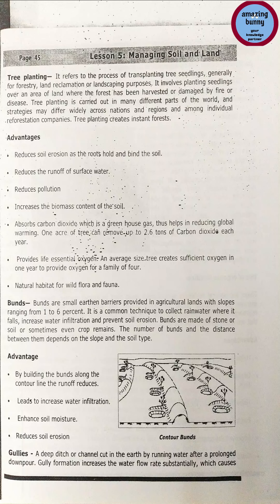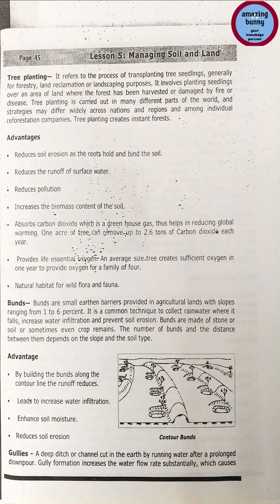Method 5 — Bunts: small earthen barriers provided in agricultural land with slopes ranging from one to six percent. A common technique to collect rain water where it falls, increase water infiltration and prevent soil erosion. Bunts are made of stone, soil, or sometimes crop remains; the number of bunts and distance between them depends on slope and soil type. Advantages: building bunts along the contour line reduces runoff, increases water infiltration, enhances soil moisture and reduces soil erosion.